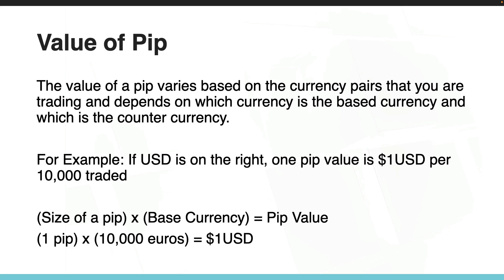The value of a pip varies based on the currency pair you're trading, and it depends on which currency is the base currency and which is the counter currency. For example, if USD is on the right side, one pip value is one dollar per ten thousand traded.